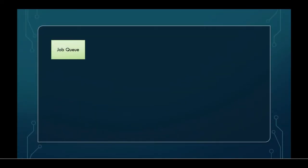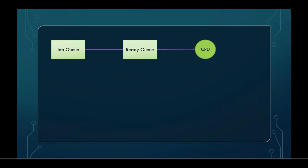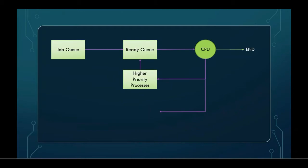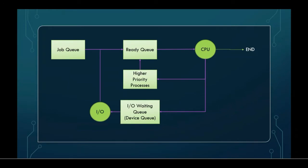The process scheduling queue has three possible outcomes. The first is the normal outcome, where a process goes from the job queue to the ready queue, then to the CPU, and then to the end of the queue. The second outcome is for partially executed high-priority processes, where the remaining processes proceed as the normal outcome. The third outcome is when the processor needs some input-output devices and then proceeds accordingly.